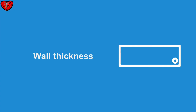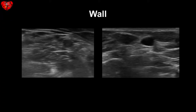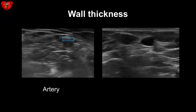Another way to tell artery from vein is looking at their wall thickness. The artery is fairly thick, with different layers in their wall including muscle. The vein has a very thin wall. Here you can see just the thickness of the wall of the artery compared to the vein.